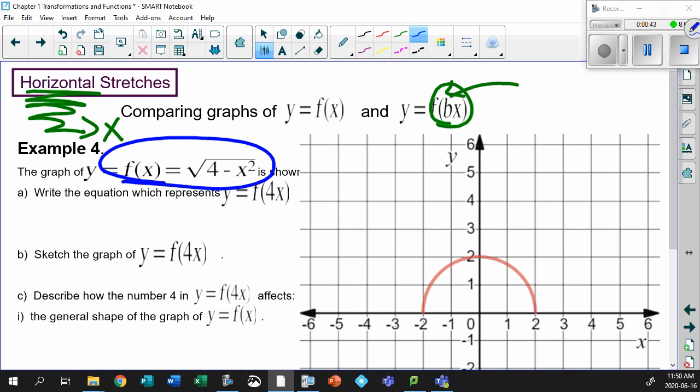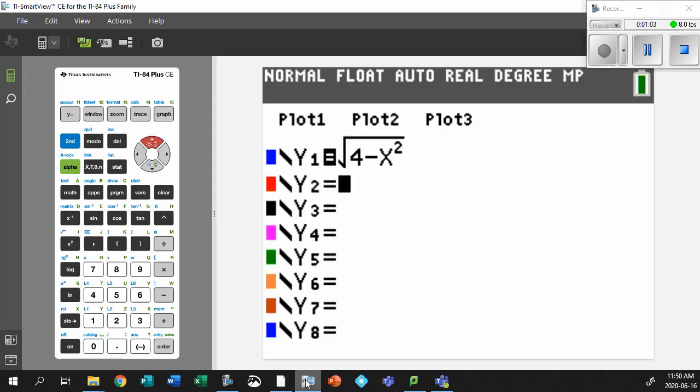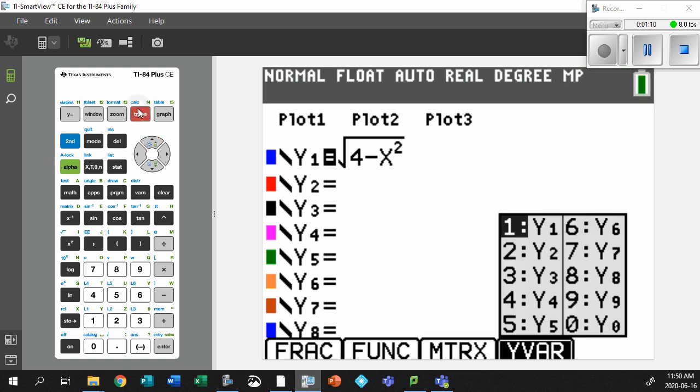Write the equation which represents this. I'm going to show you how to do that in a few seconds. I want to go right into putting this into my y1, and then putting this into my y2, and watch what happens to this beautiful picture that we have right here. So time to bring up the calculator. You'll notice that I've got my square root of 4 minus x squared. It's all good to go.